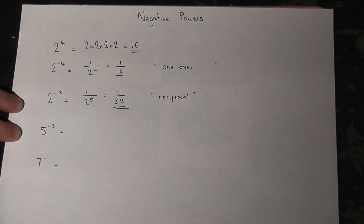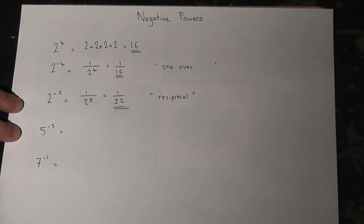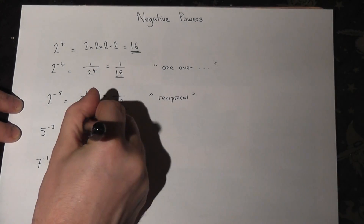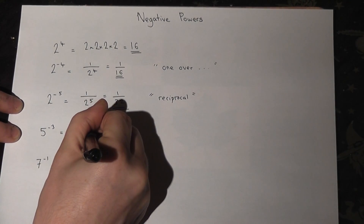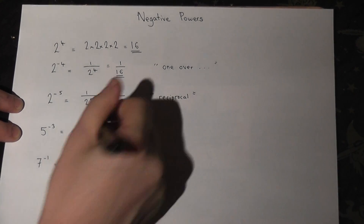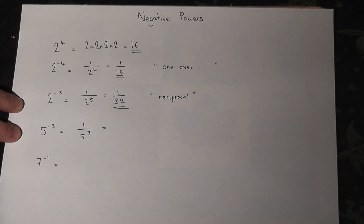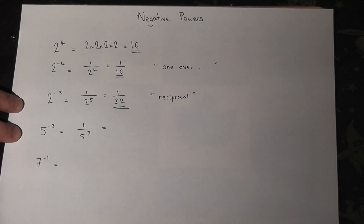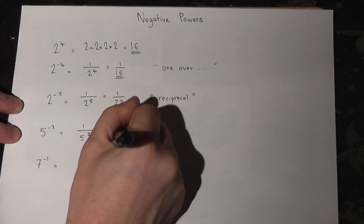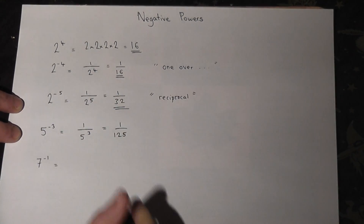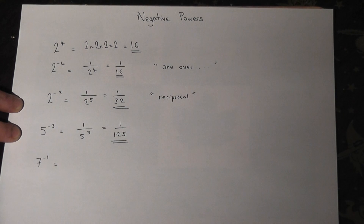Now the 4th one is another negative power, so again we know it just means 1 over — so 1 over 5 to the power of 3. A bit harder that one. 5 times 5 is 25, so 5 times 5 times 5 is 5 times 25, which is 125. So it's 1/125.